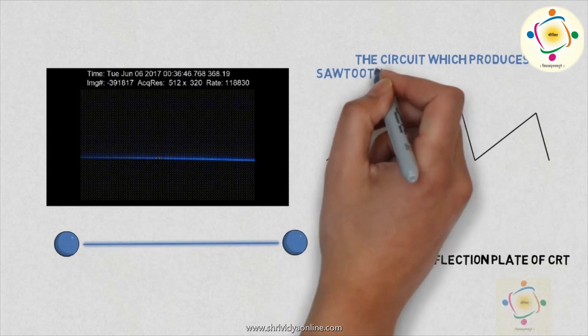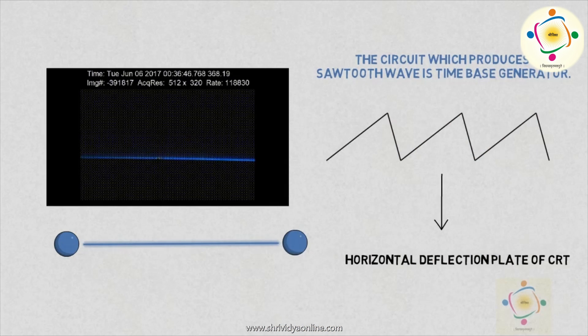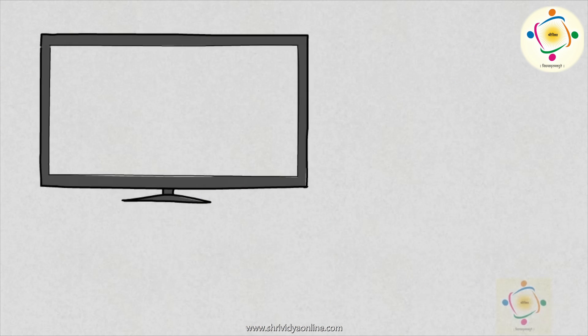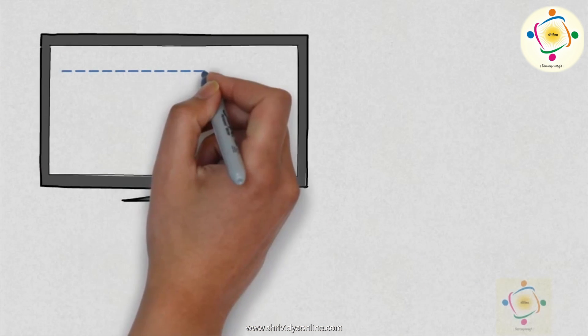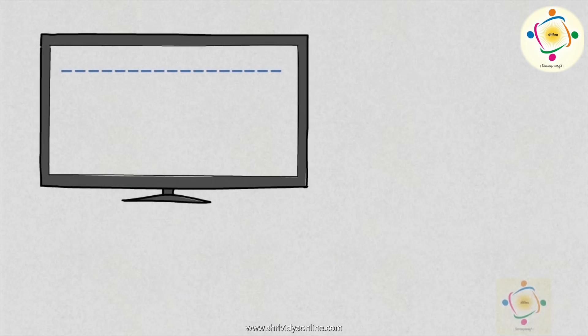The circuit which produces sawtooth wave is known as the time-based generator. When the electron beam moves from left to right, it is known as trace. The time required for trace is the trace time.